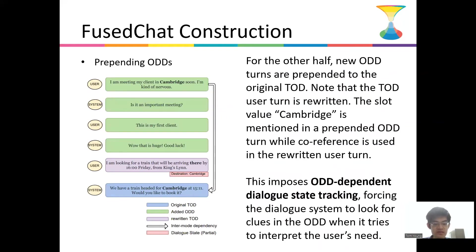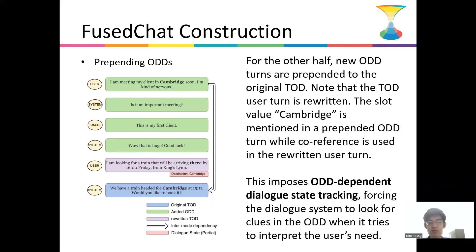We also prepend the ODD to the existing TOD. We want inter-mode dependency, which means that the existing TOD should be dependent on the prepended ODD. To impose such dependency, we rewrite the TOD. Our method of rewriting the TOD essentially imposes ODD-dependent dialogue state tracking.